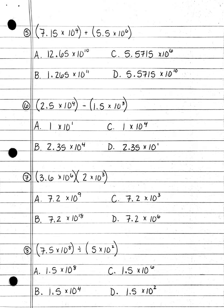Number 5. 7.15 times 10 to the fourth power plus 5.5 times 10 to the sixth power: A. 12.65 times 10 to the tenth power; B. 1.265 times 10 to the eleventh power; C. 5.5715 times 10 to the sixth power; or D. 5.5715 times 10 to the tenth power.